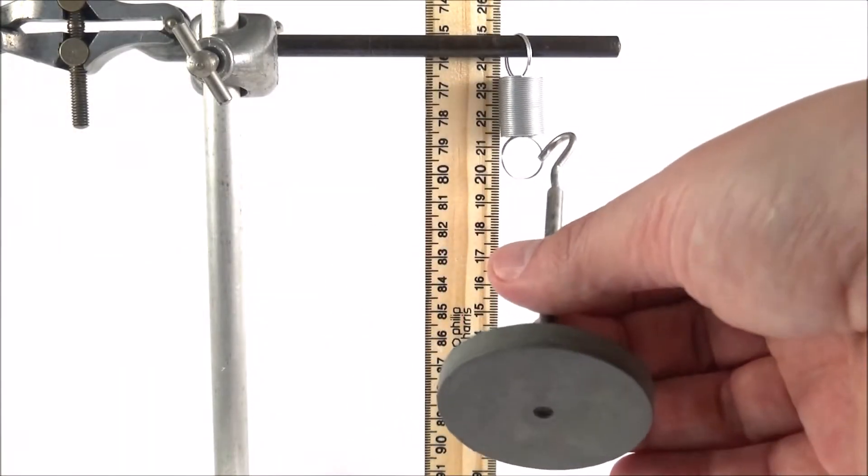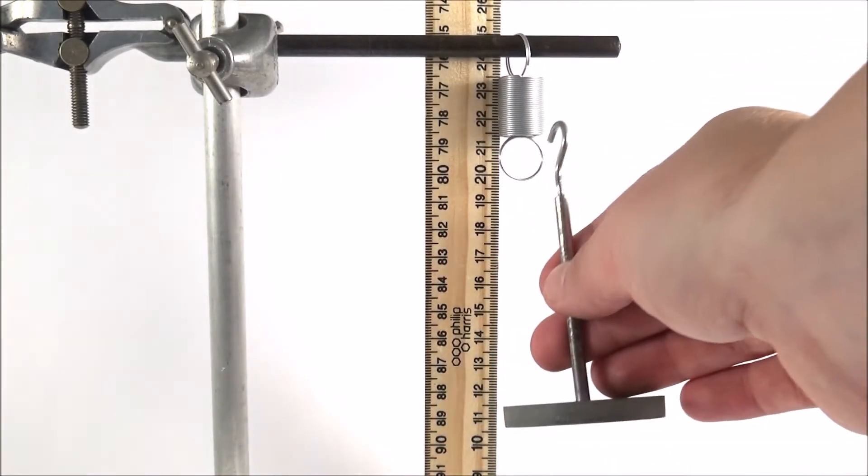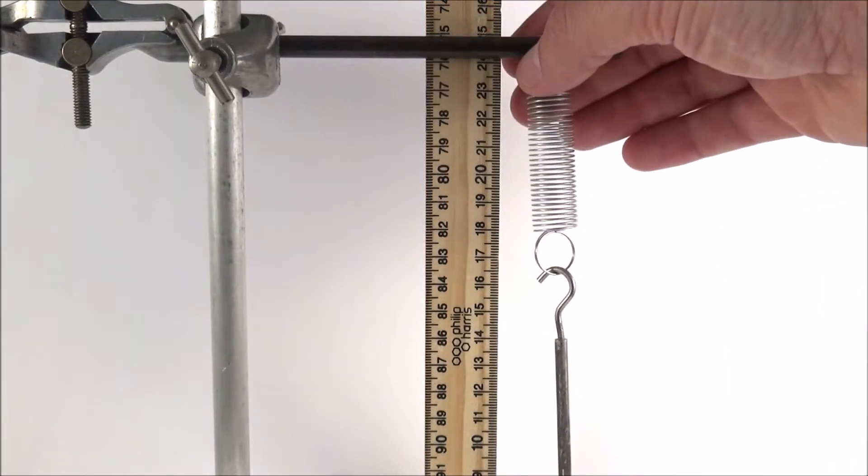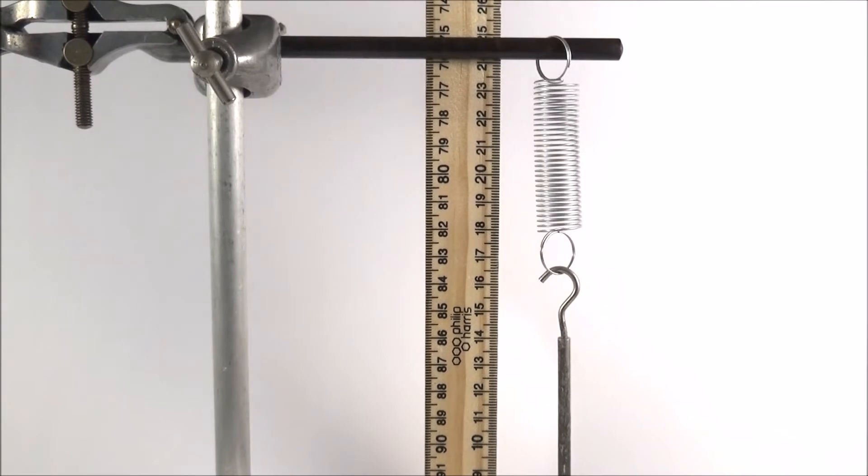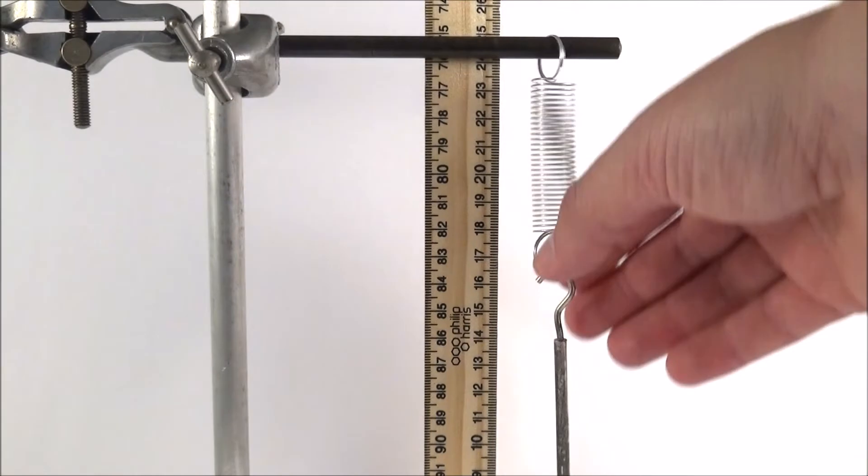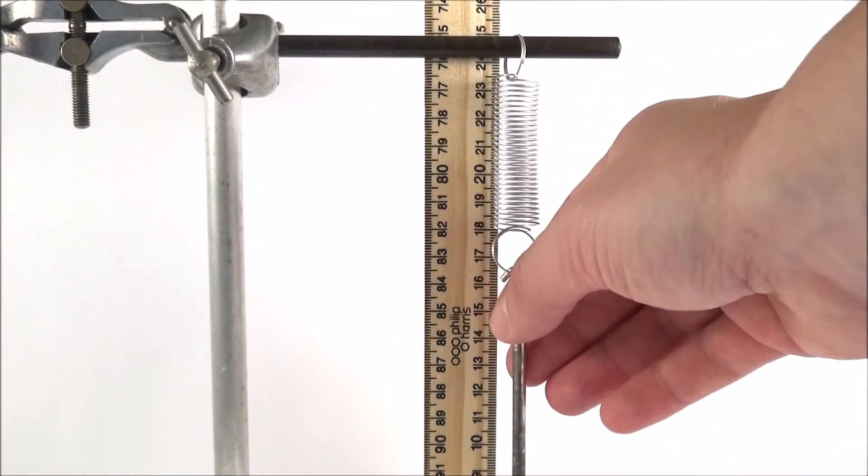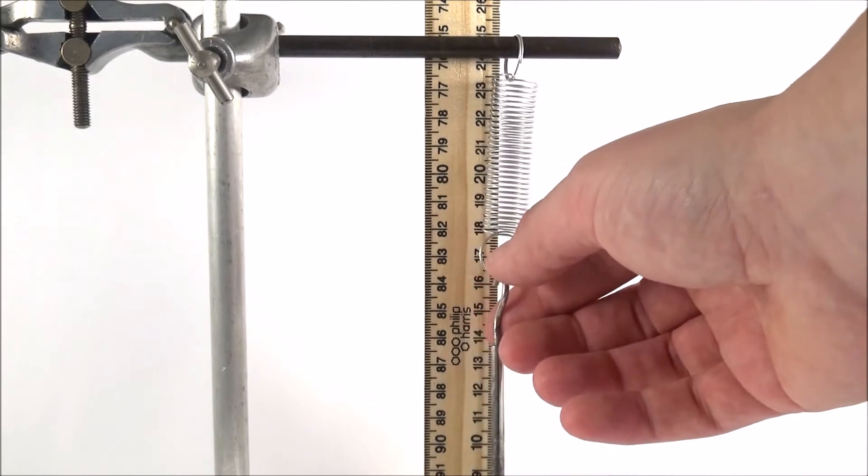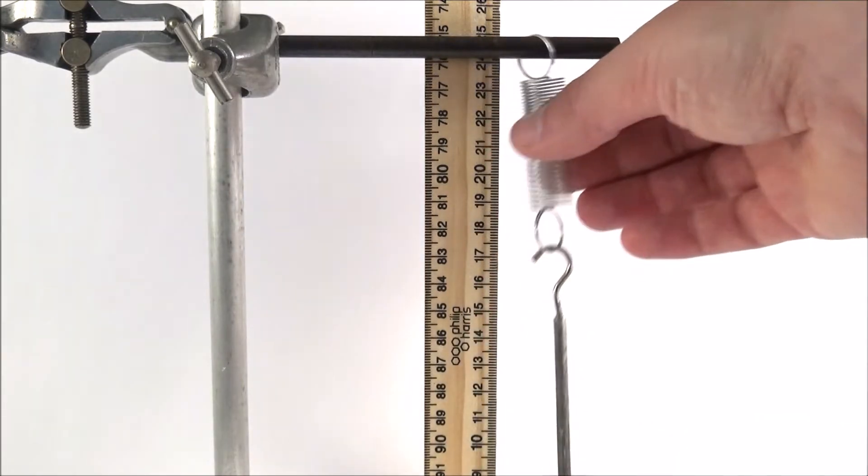I've then got a one newton weight or a hundred gram mass and all I'm going to do is hang that on there. This is why it's actually quite useful to have your ruler in a separate retort stand because you can actually then bring it around so it doesn't actually interfere with the spring, so the spring is just hanging nicely, and again you can then record the new length and the extension.